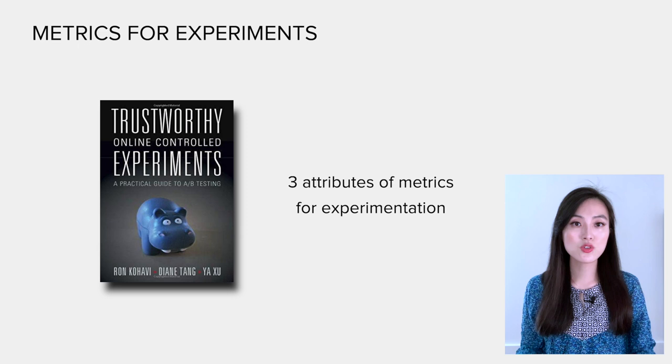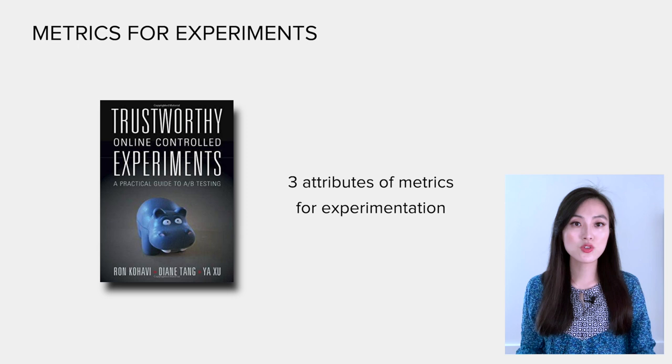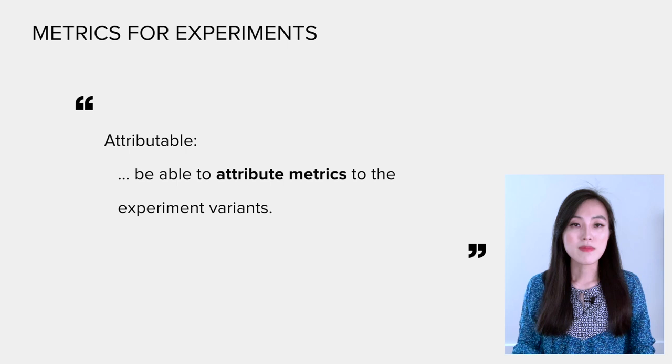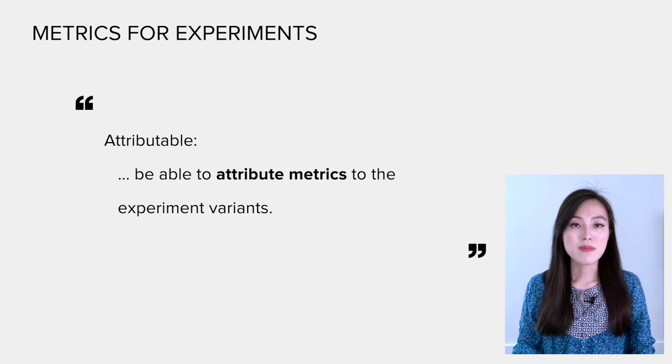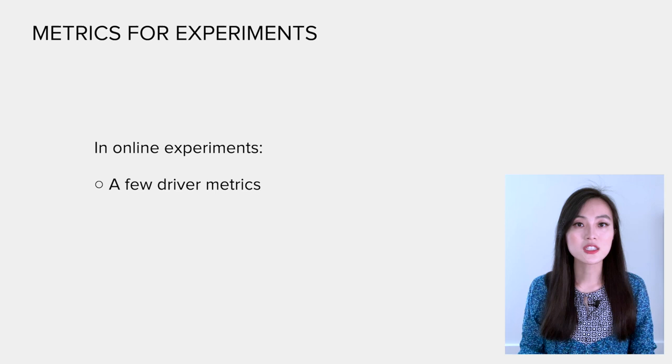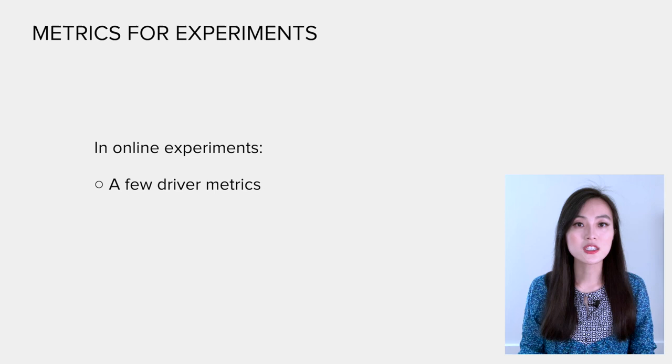Next, let's go over what are the requirements of metrics that can be used directly for experimentation. In the book, the authors summarize three attributes for metrics that are suitable for experimentation: measurable - we should be able to calculate those metrics with data collected during the experiment period; attributable - we should be able to attribute metric values to the experiment variants, it means that the metrics should be able to be calculated separately for different variants in the experiment; and sensitive and timely - experiment metrics should be sensitive enough to detect changes in a timely manner.